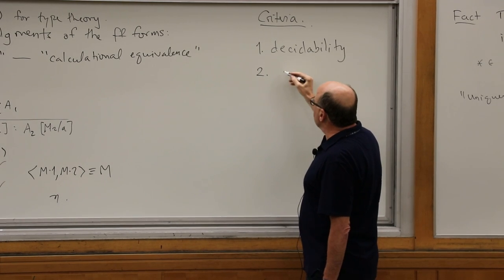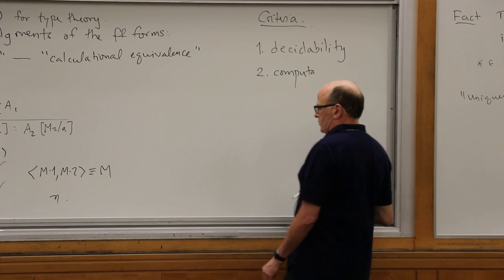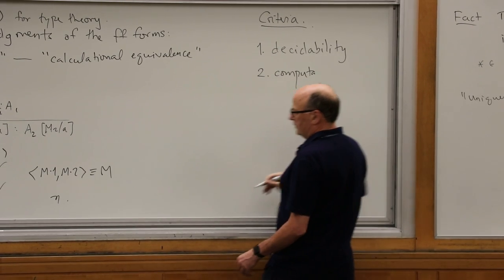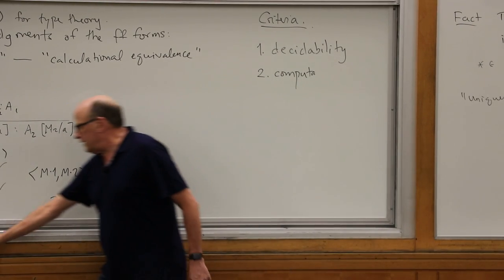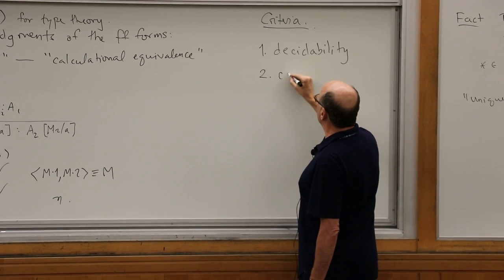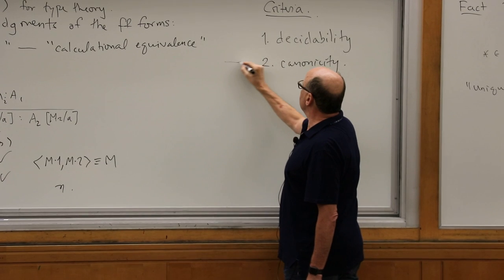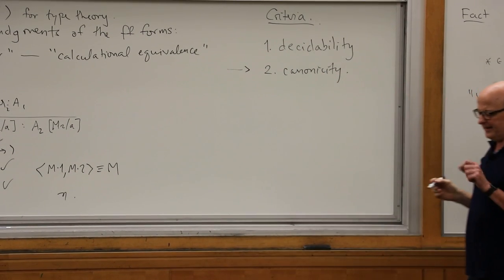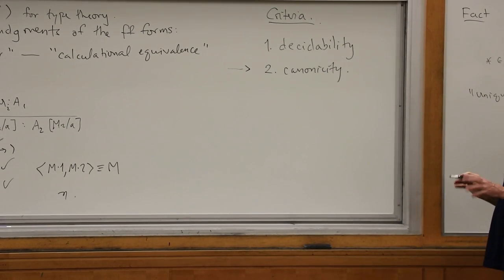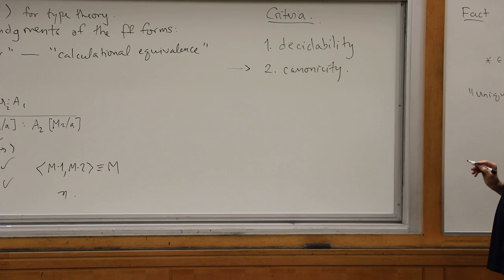The other criterion is a kind of computational adequacy — it's usually called canonicity, though unfortunately people mean lots of things by canonicity. That's going to be the jumping-off point I'm going to use as a rhetorical device. So we're going to emphasize that.